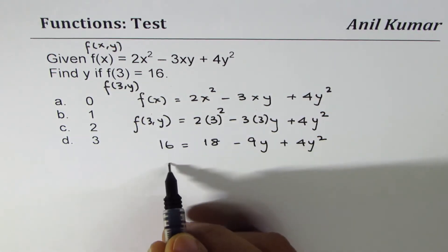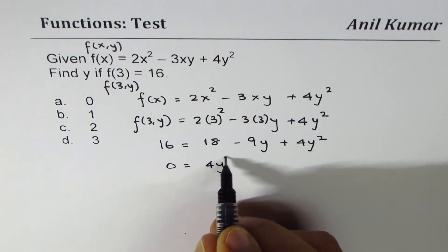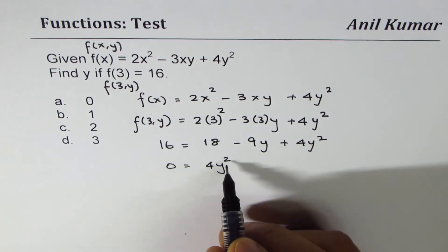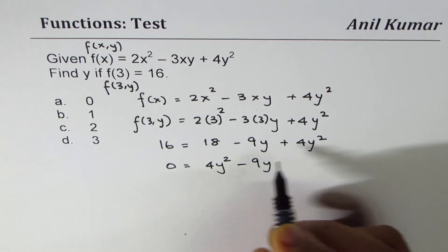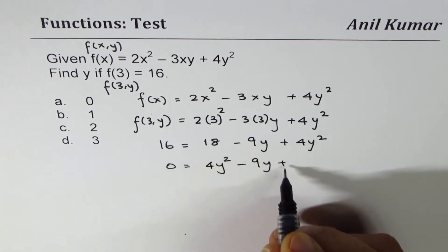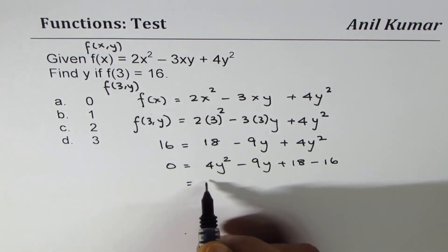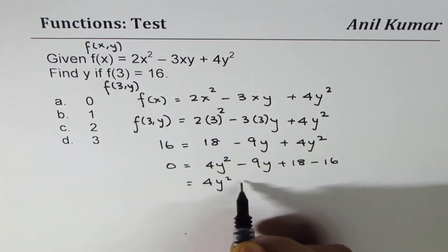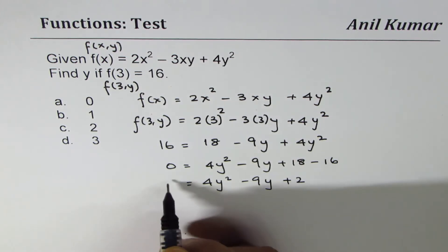We can bring 16 to the other side. Let's rearrange in proper order: 4y² - always higher degrees first, that's the idea - and we have plus 18 minus 16, which gives you 4y² - 9y + 2 = 0.